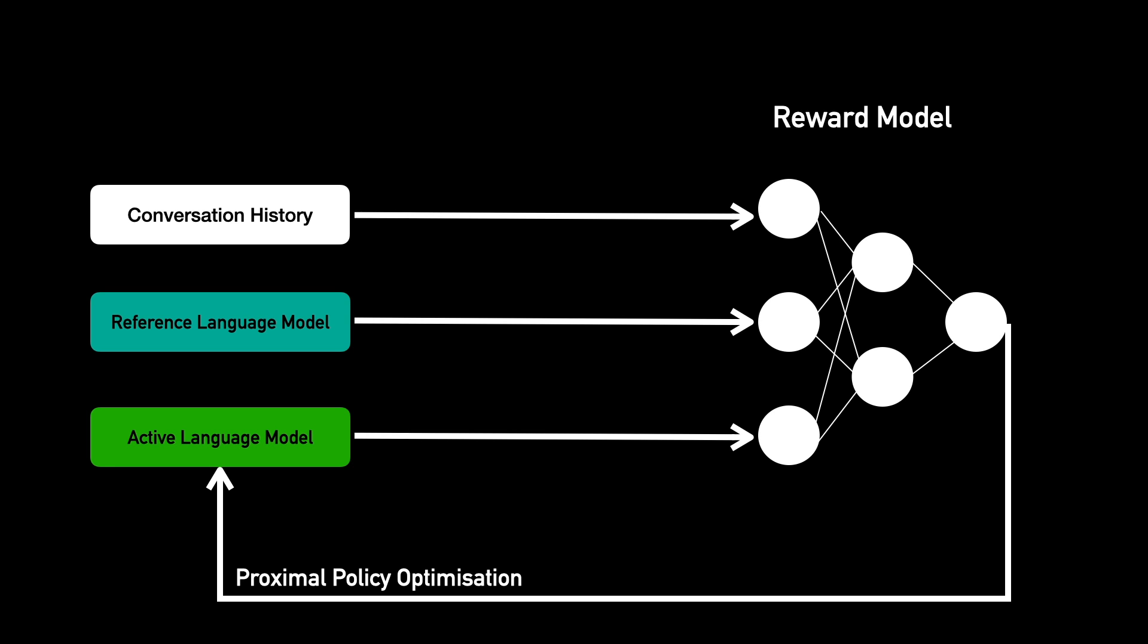Now the problem with this setup is that our reward model isn't perfect. How could it be, since it was only trained on a small subset of ranked answers? It cannot reward all conversations about a variety of topics in the world properly. And over time, the model may start taking advantage of the deficiencies of this reward model.